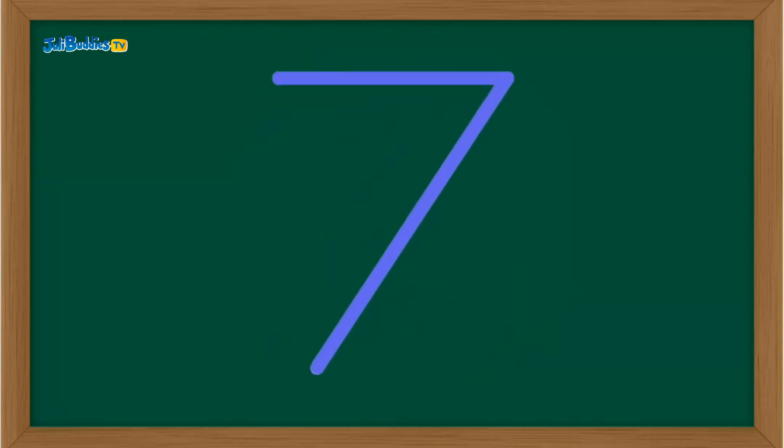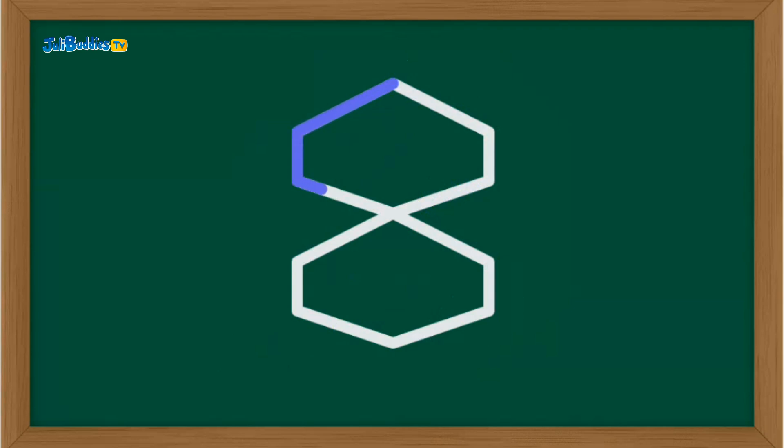All right. It's time for number eight. Make an S shape, then connect it back to the top to make two loops. Super duper! That's an eight.